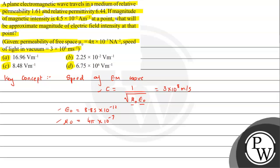Now we talk about the speed of light in another medium. We write v = 1/√(μₘ εₘ), where μₘ is the permeability of that medium and εₘ is the permittivity of that medium. For a medium, we use relative permeability and relative permittivity. So μₘ can be given as μ₀ × μᵣ.